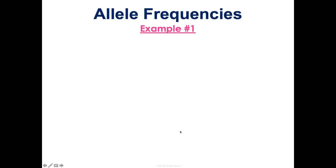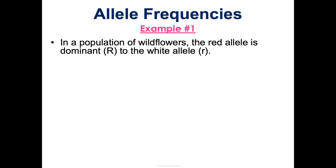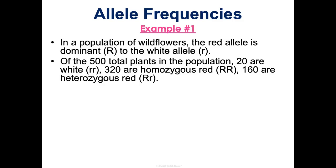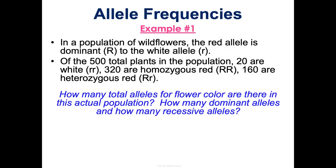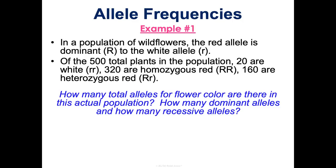Let's do an example. In a population of wildflowers, the red allele is dominant (big R) and the white allele is recessive (little r). There are 500 total plants: 20 are white — homozygous recessive, little r little r; 320 are homozygous red, big R big R; and 160 are heterozygous red, big R little r. To find how many total alleles there are: 500 plants, each with two alleles, gives us 1,000 total alleles in the gene pool.